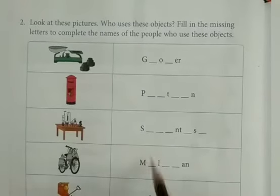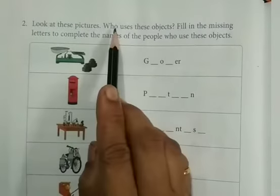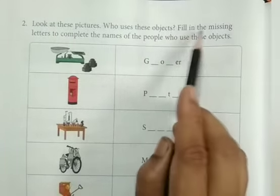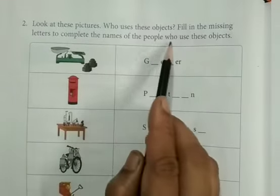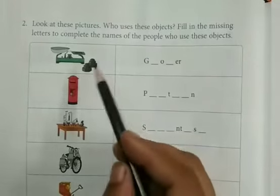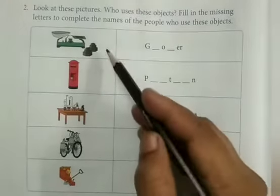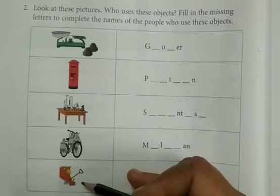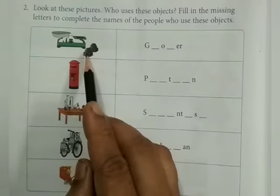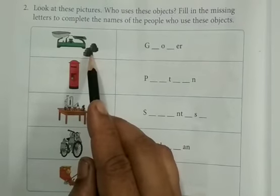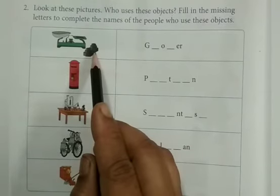Page 46, exercise 2. Look at these pictures. Who uses these objects? Fill in the missing letters to complete the names of the people who use these objects. Now see, here are few tools or objects as picture clues. You have to find out a person who uses these things.